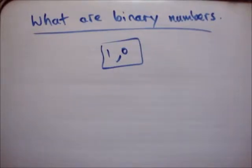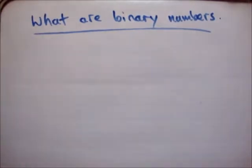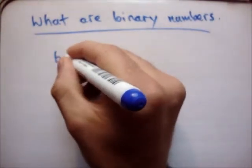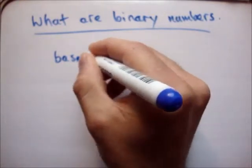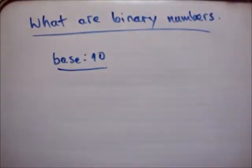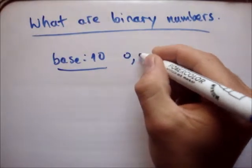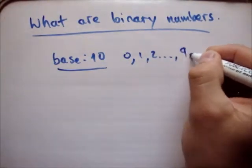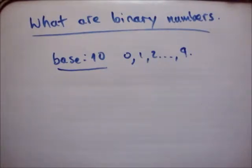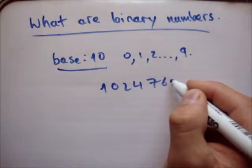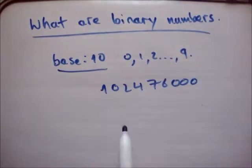So how does a series of binary numbers help you write a text message or draw something? We'll just introduce that. The first thing is, we live in a world where we use what's called base 10. What base 10 means is we use 10 different numbers in order to make up every other number. The 10 numbers we use are 0, 1, 2, up to 9. And with those 10 numbers, you're able to make up any number in the world. That enormous number there is made up of those initial 10 numbers.